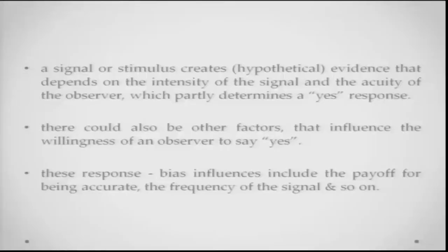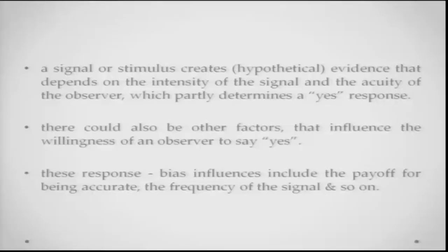There could also be other factors which determine how you are going to respond — for example, the willingness of an observer to say yes. Maybe if you are not very sure, or if the decision is slightly difficult to make, maybe you will wait for a completely convincing case and more evidence to say yes. These kinds of influences which determine your willingness to say yes or not are called response biases. These response bias influences also include the payoff for being accurate or the frequency of the signal, and many other factors.